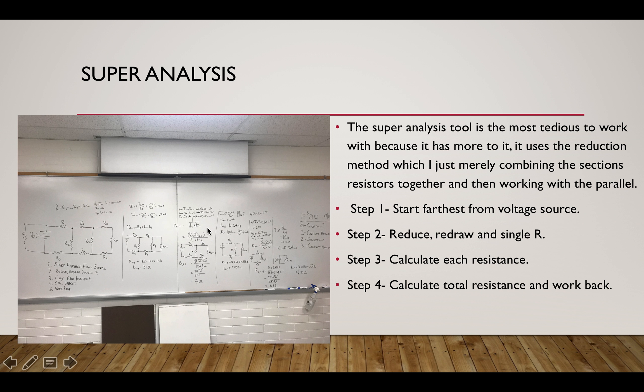And then we follow Kirchhoff's current law. And it's just reduce, reduce, the same thing with this one, reducing it, reducing, combined, reducing, combined. And we use the equations like the junction rule, and then we calculate each resistance and total resistance, and then we work back, we start to work back.